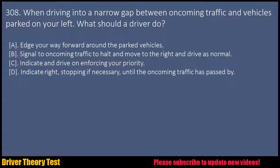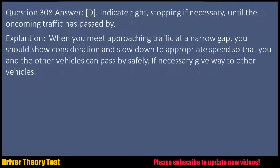Question 308: When driving into a narrow gap between oncoming traffic and vehicles parked on your left, what should a driver do? a. Edge your way forward around the parked vehicles. b. Signal to oncoming traffic to halt and move to the right and drive as normal. c. Indicate and drive on enforcing your priority. d. Indicate right, stopping if necessary, until the oncoming traffic has passed by. Question 308 Answer: D. Indicate right, stopping if necessary, until the oncoming traffic has passed by.